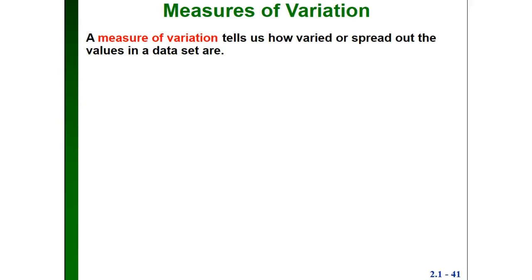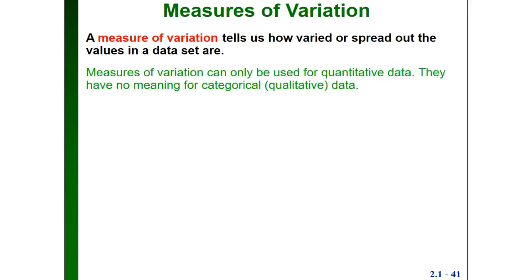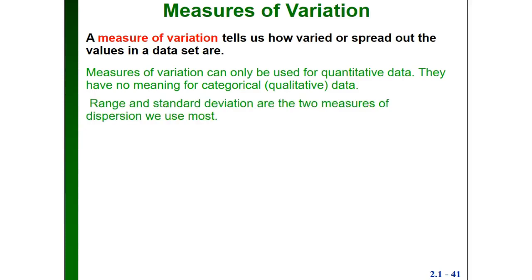In this video we're going to talk about measures of variation, also called measures of dispersion. A measure of variation tells us how varied or spread out the values in a data set are. These can only be used for quantitative data — they have no meaning for categorical or qualitative data. The two we use the most are the range and the standard deviation.